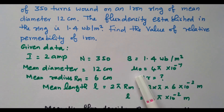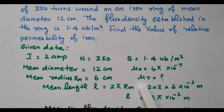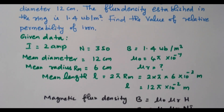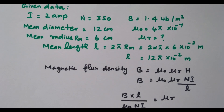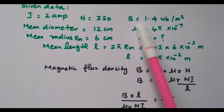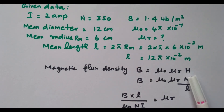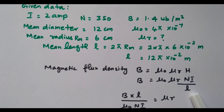Also, μ₀ (absolute permeability) is a constant equal to 4π × 10⁻⁷. We need to find the relative permeability μR of iron. Starting from B = μ₀μR × H, and replacing H with NI/L, we get the relation between B and H in terms of the circuit parameters.